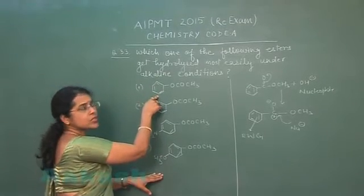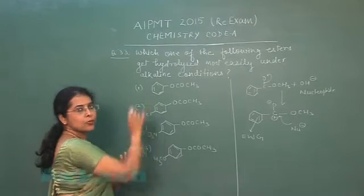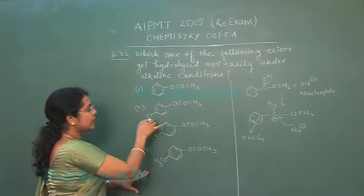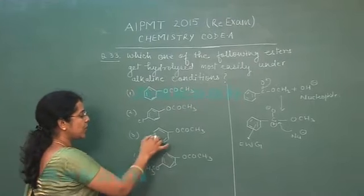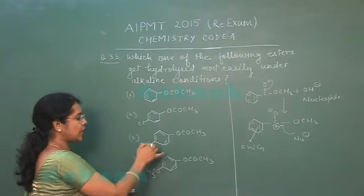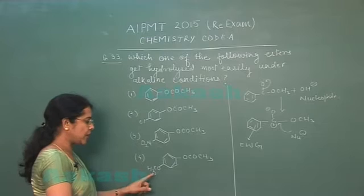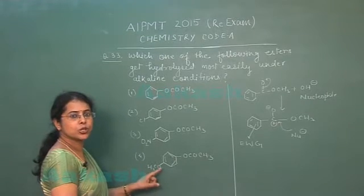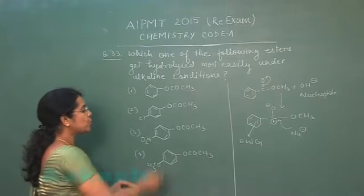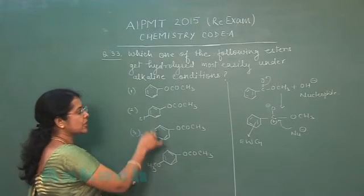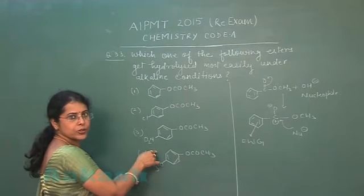Now see in this case, there is no such type of group is present. Here it is chlorine. Chlorine is electron withdrawing group. That is true. Here it is NO2. This is again electron withdrawing group. This is CH3O. CH3O that is methoxy group. It is electron donating group. So only in these two cases, this electron withdrawing group is present.